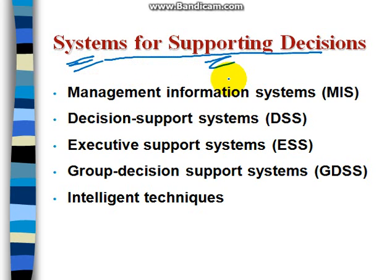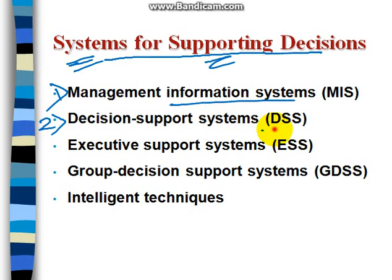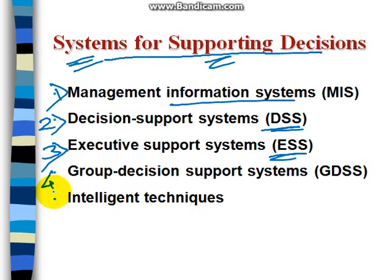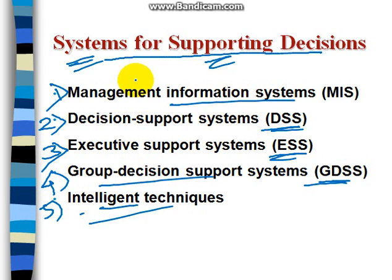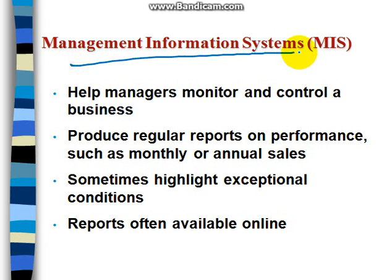So what are the systems for actually supporting decisions? Basically MIS is going to support decision making. There is also a specific system called the Decision Support System, that is DSS. Third is the Executive Support System, ESS. Fourth is the Group Decision Support System, GDSS. And fifth is about intelligent techniques. These are five systems which are helpful in decision making.